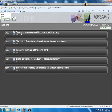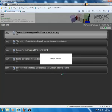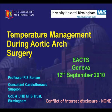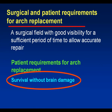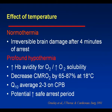To survive without brain injury, at normothermia, irreversible brain damage occurs after four minutes of arrest. We use cooling to try and increase the ischemic tolerance of the brain.